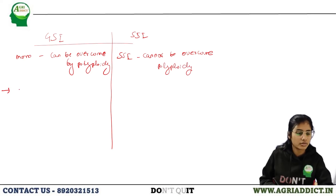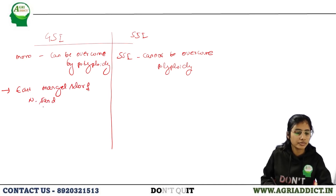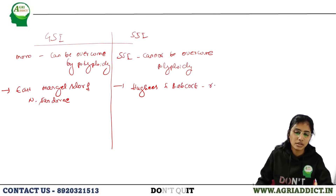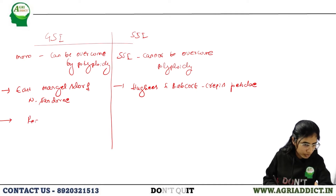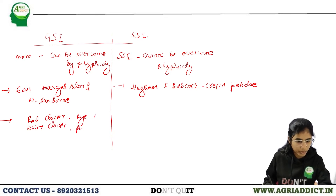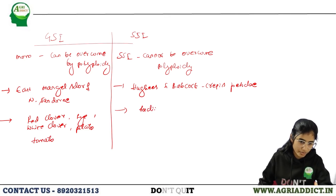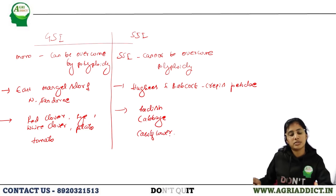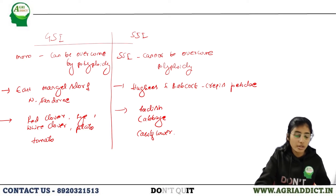Gametophytic SI was discovered by East and Mangelsdorf in Nicotiana sanderae. Sporophytic SI was discovered by Bateman in Crepis fetida. Gametophytic SI is seen in crops like red clover, rye, white clover, potato, and tomato. Sporophytic SI is seen in radish, cabbage, and related crucifers.